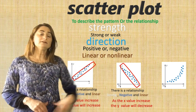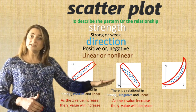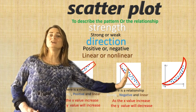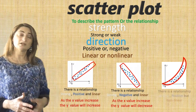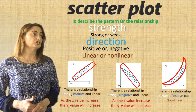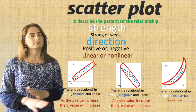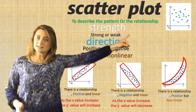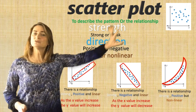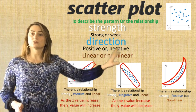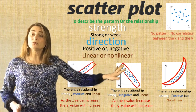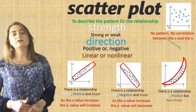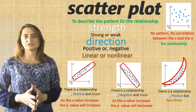In this case, there is a relationship — there is a pattern — but this time it curves and the dots are close to each other. So there is a relationship. It's strong, positive, but it's non-linear. And the last example we talked about: you don't see a pattern. There is no correlation or association between x and y. I can't conclude anything. Therefore, there's no relationship.